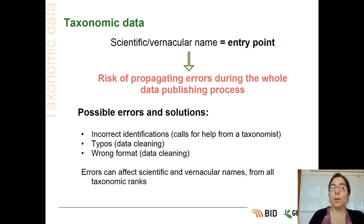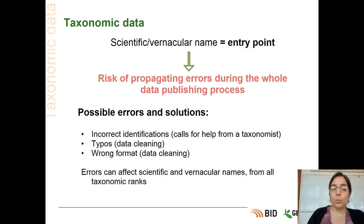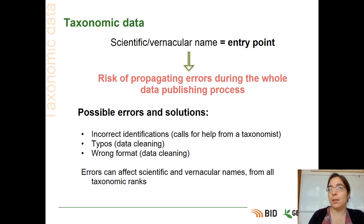The most common types of errors are incorrect identifications. If you are not sure about the identification of a specimen or individual, you should call for help from a taxonomist — one of your colleagues or an expert who is a reference in taxonomy. We can also find a lot of typos in taxonomic data, especially in scientific names. Typos can be cleaned during the data cleaning process that we will see later in this training.